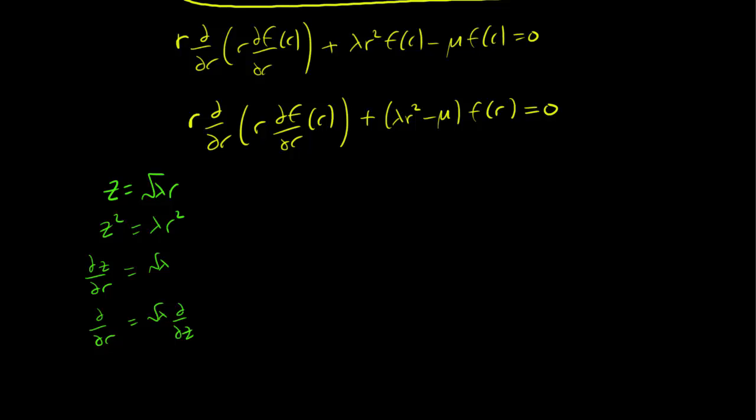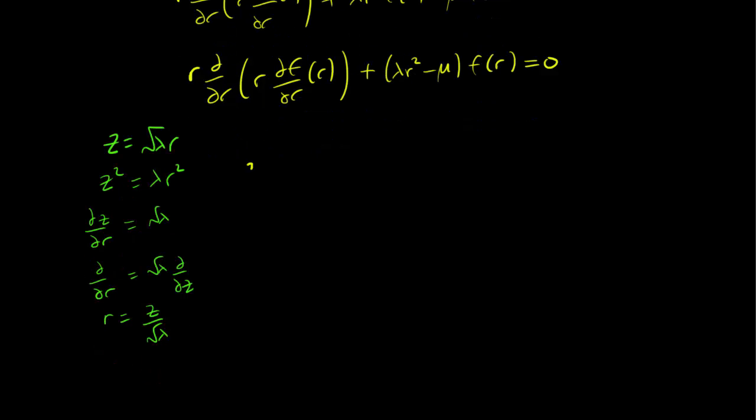This implies that ∂/∂r = √λ (∂/∂z). Replacing all r's with z's, and keeping in mind that r = z/√λ, we substitute these into our equation.